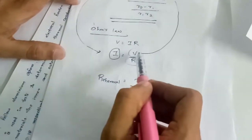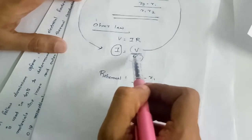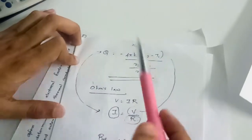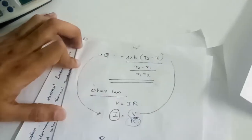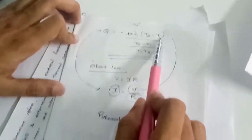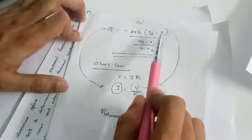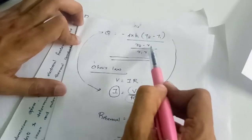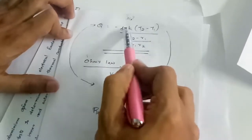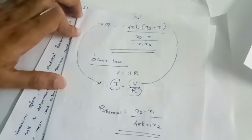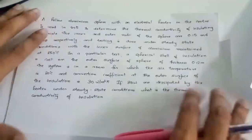In the electrical analogy: current flows due to a potential difference V against resistance R. Similarly, heat flows due to a temperature difference (T2 - T1) against a thermal resistance. The thermal resistance is R_thermal = (R2 - R1) / (4πk·R1·R2). This is the same concept — we compare heat transfer with the electrical analogy.